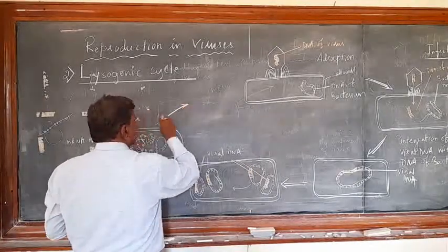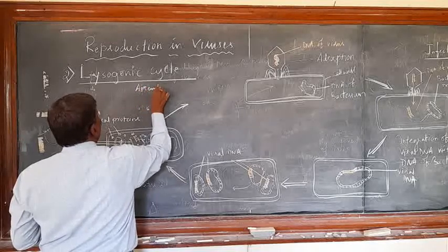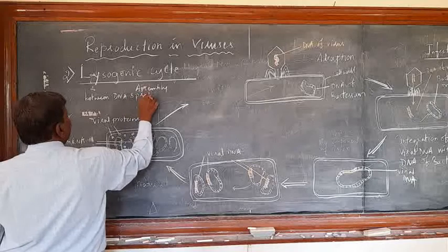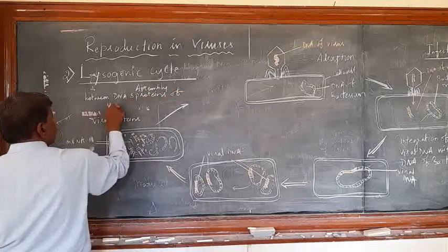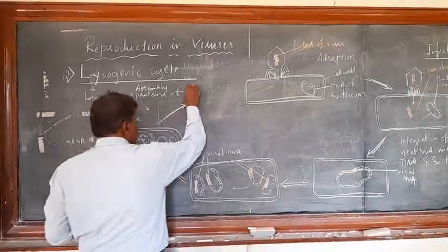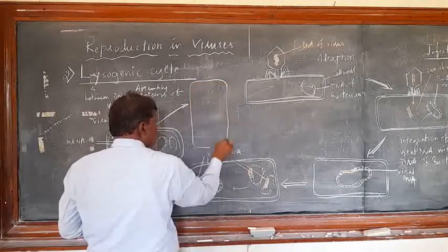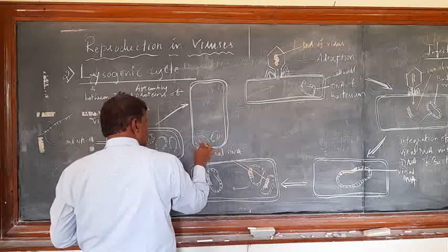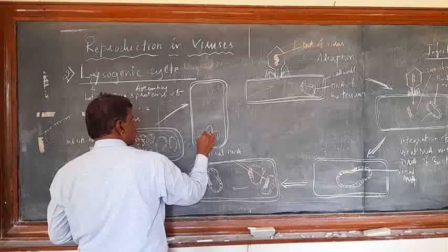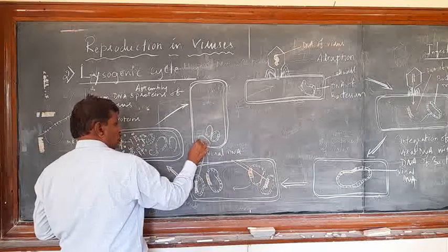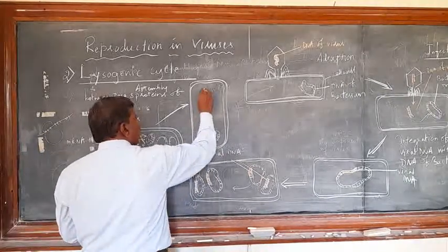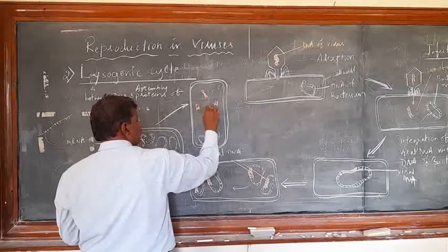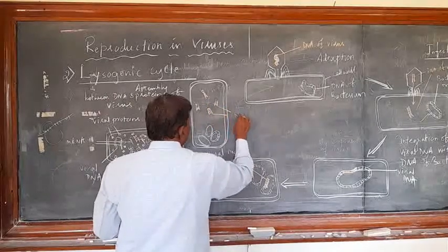What happens is, these are supposed to be the viral proteins. Next, as usual, an assembly between DNA and proteins of the virus occurs. Here, if this is the bacterial cell, maybe these are supposed to be the bacterial DNAs.